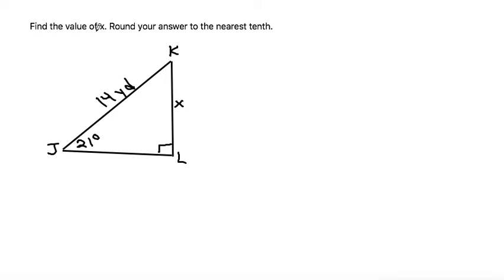This problem says to find the value of x, round your answer to the nearest tenth. In this triangle, we have an angle that's given, we have one side length that's given, and one side length that we're looking for.